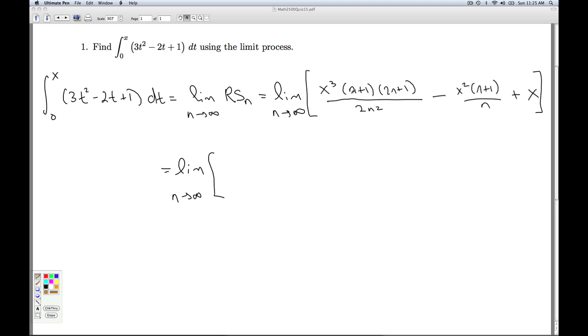So what I'm going to do is factor the n out from this quantity and from this quantity, and that's going to give me an n squared. When I take the n out of this quantity, I'm left with 1 plus 1 over n. Here I'm left with 2 plus 1 over n. And in the denominator, I've got my 2n squared, minus x squared times, factor the n out there, I'm left with 1 plus 1 over n over n plus, of course, x.